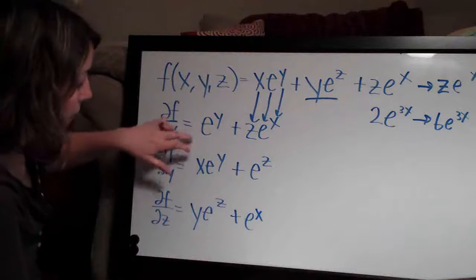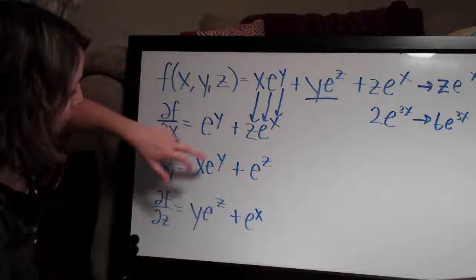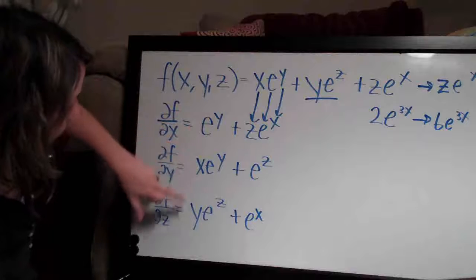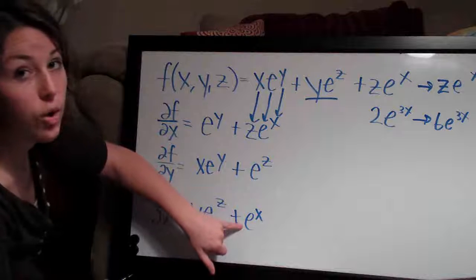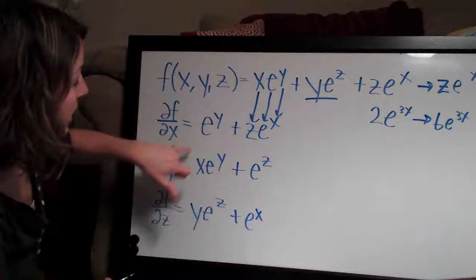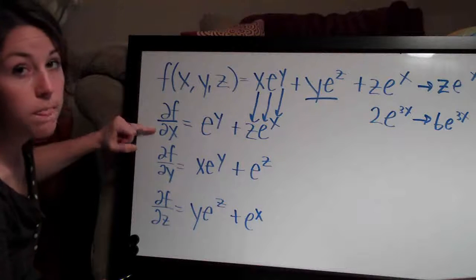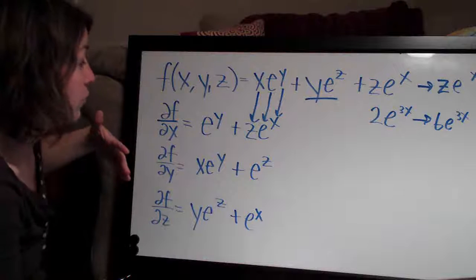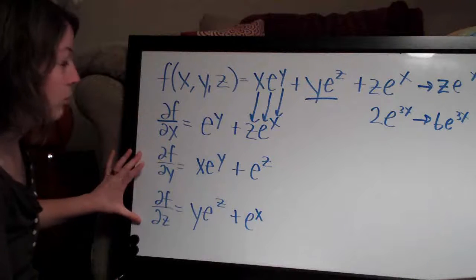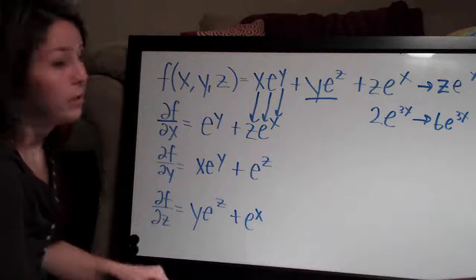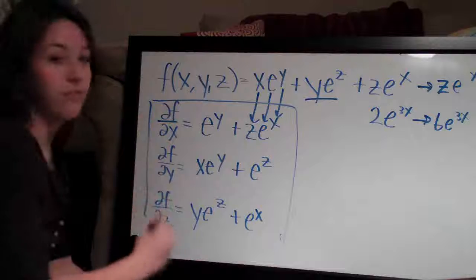For the last term, z e to the x: the z drops away and we're left with e to the x, because e to the x is like a coefficient on that z. So we get e to the x. You can see how all three partial derivatives take a similar form — z e to the x, x e to the y, and y e to the z all came down unchanged, while e to the y, e to the z, and e to the x appeared from the coefficient terms. In each case, the term with no matching variable reduced to zero. Here are your three partial derivatives — all three need to be included in the answer, and this whole thing is the final answer for this problem.